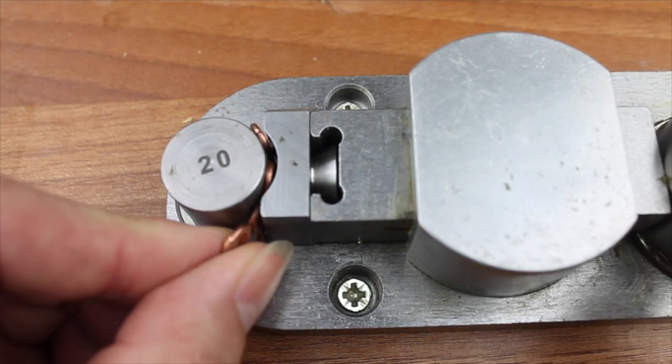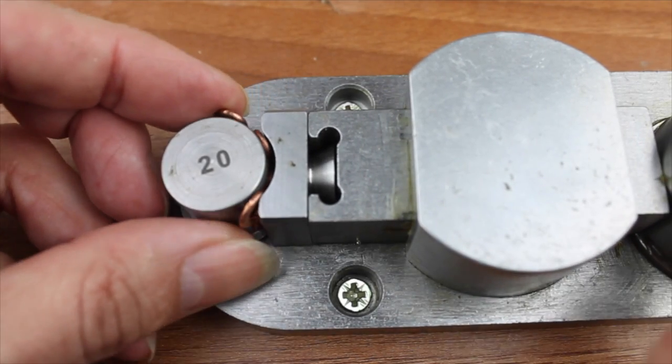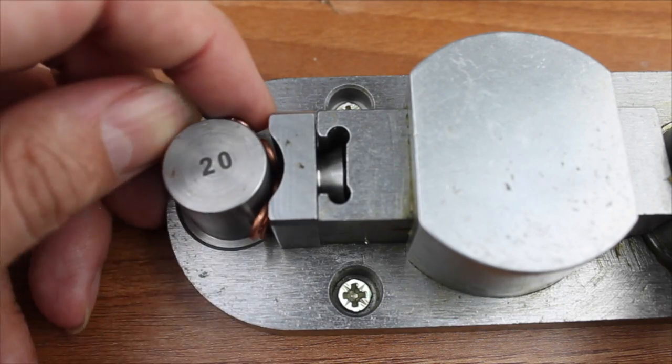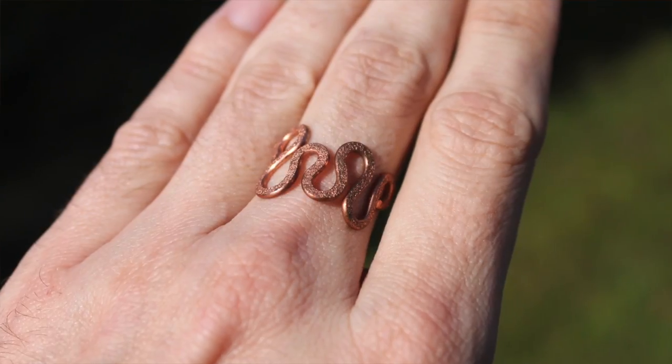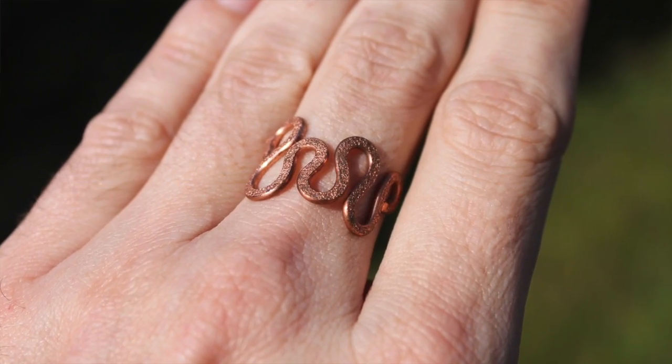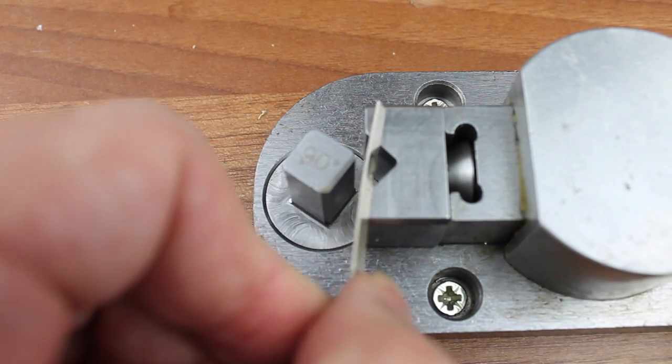Just to show you some of the other dies here, this is a 20mm and I'm bending a piece of wavy wire here. You don't have to use flat strip, you can use anything, and this could be the start of a ring, for example, something like that.